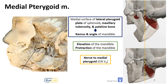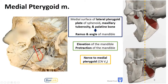Next is the medial pterygoid muscle. It originates from the medial surface of the lateral pterygoid plate, the maxillary tuberosity, and has an attachment on the palatine bone as well. It then mirrors the masseter and attaches to the ramus and angle of the mandible. Paralleling the masseter, it performs similar actions — both elevation and protraction. The nerve to it is the medial pterygoid nerve.